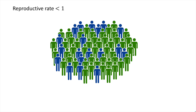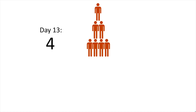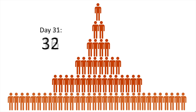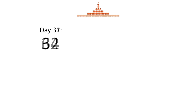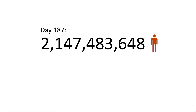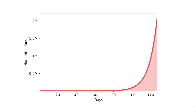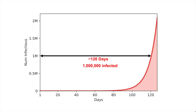Suppose, for example, that each sick person infects two new people and that the process of those new people getting infected and becoming contagious takes six days. On the first day we'll have one sick person; on the seventh day, two; on the thirteenth day, four; on day nineteen, eight sick people. So far it doesn't seem too bad. But at this rate, on day one hundred and eighty-seven, we would have more than two billion sick people. That's exponential growth. Although in this model it took about sixty days to get our first thousand patients, the second thousand only took six more days.